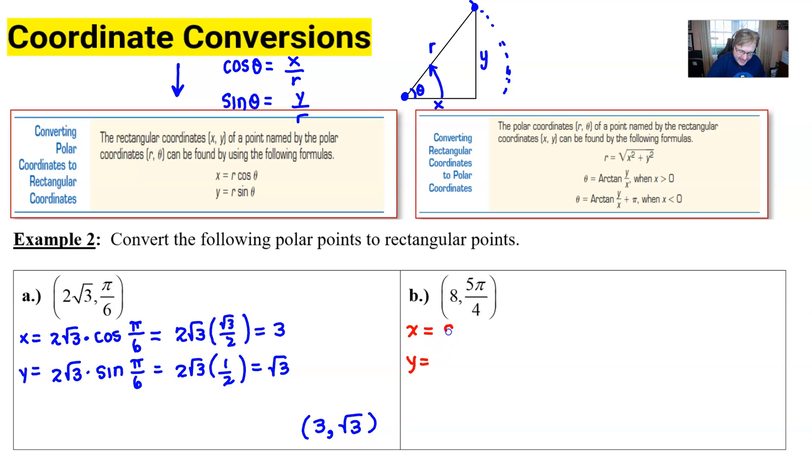So for x is equal to r cosine of theta we would have 8 times the cosine of 5π/4. This problem is a little tricky because you've got to think about the cosine of π/4. The fact that it's located in the third quadrant all students take calculus, right? That's what we all hope. All students take calculus in that third quadrant only tangent is positive which means your cosine is negative and the reference angle would of course be a π/4.